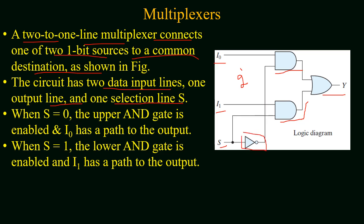The select line is provided complemented to the first AND gate and uncomplemented to the second one. So whenever S equals 0, the upper AND gate is enabled and I1 has a path to the output, because if one input of the AND gate is equal to 1 then its output is equal to the second input.